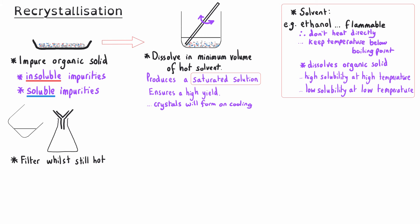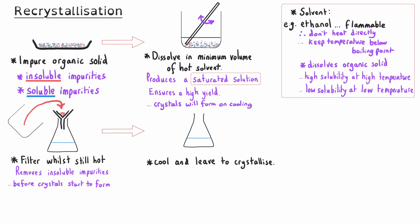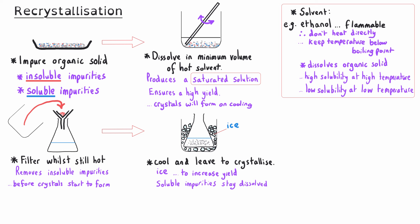Once we've dissolved our crude organic solid, we need to filter it whilst it's still hot to remove any insoluble impurities from our solution. This must be done before any crystals have started to form, because if crystals had formed and we then filtered, we would be filtering out some of the crystals we want to produce. We then allow our filtrate to cool and leave it to crystallize, potentially in cold water or an ice bath. This increases the yield of crystals that form. Meanwhile the soluble impurities ideally stay dissolved in the filtrate.